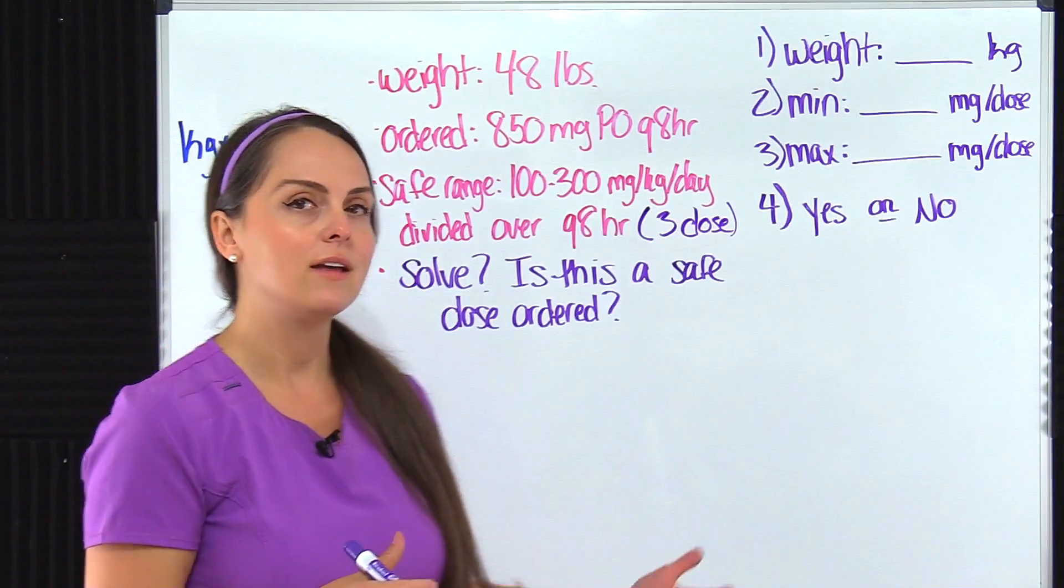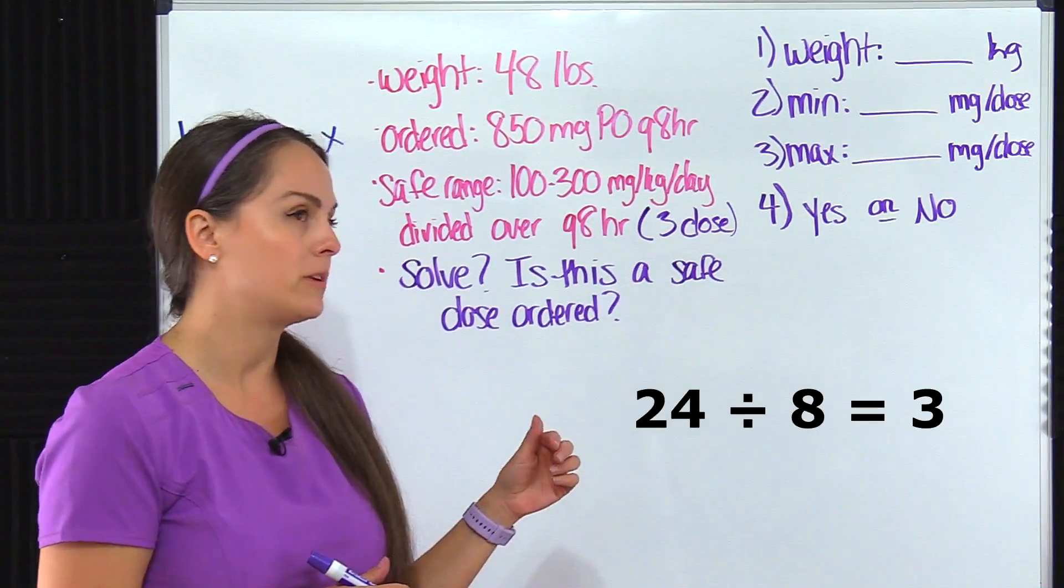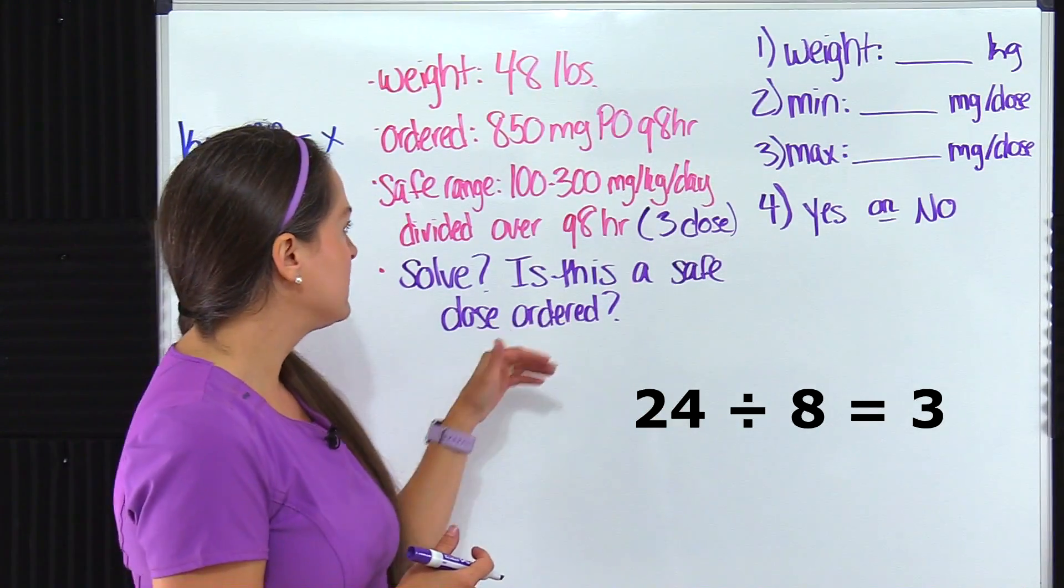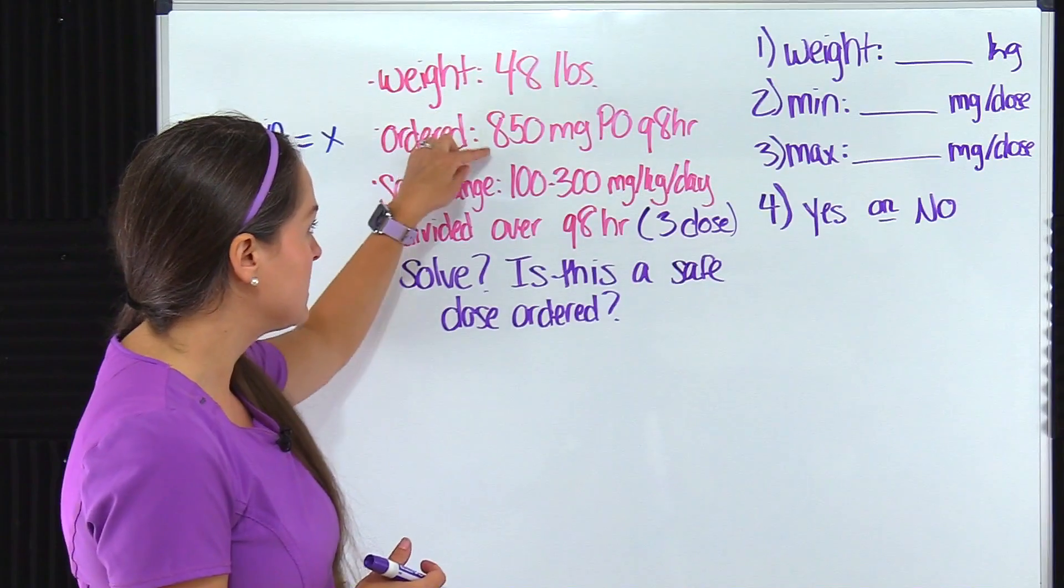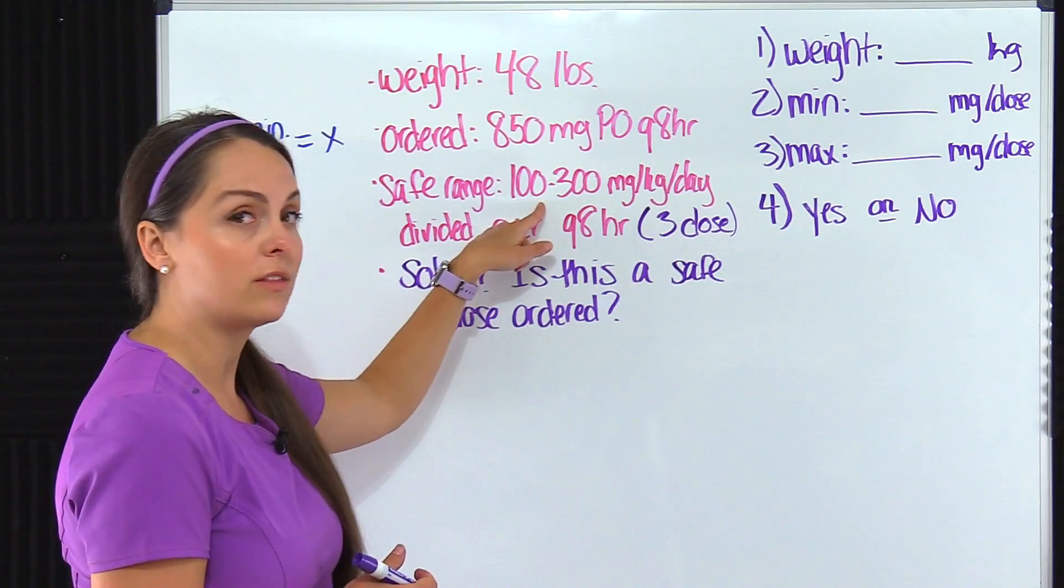And how I know that is because there's 24 hours in a day. And if we're giving this every eight hours, when we divide 24 into eight, we get three. And what we need to solve for is if this right here that's ordered, if it's a safe dose, does it fall within this range.